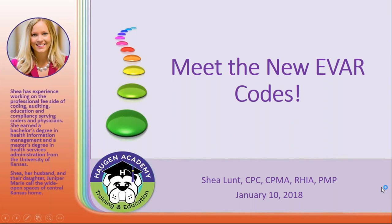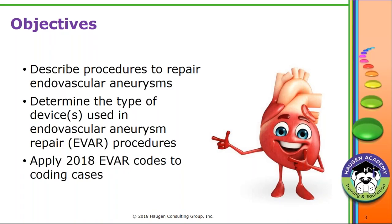Thank you, Kathy. I'm excited to talk about these new codes for 2018—codes traditionally associated with abdominal aortic aneurysm repair, or EVAR, performed in the IR suite. Today we'll dive into the new code set, starting with the change to our CPT subsection, now called 'endovascular repair of abdominal aorta and/or iliac arteries.' We'll cover new codes, additions, deletions, revisions, parenthetical notes, coding instructions, anatomy, devices, and a coding case.